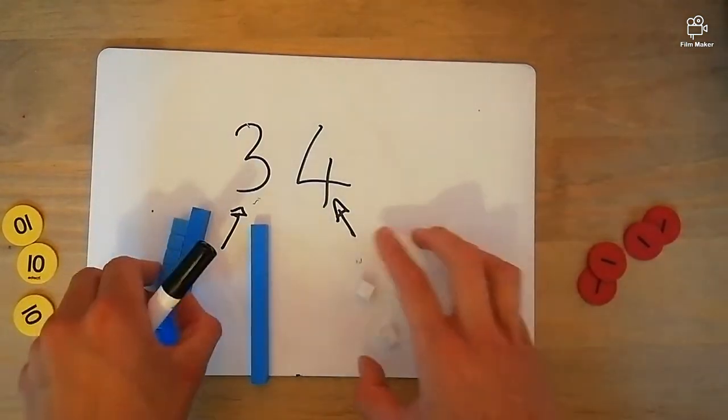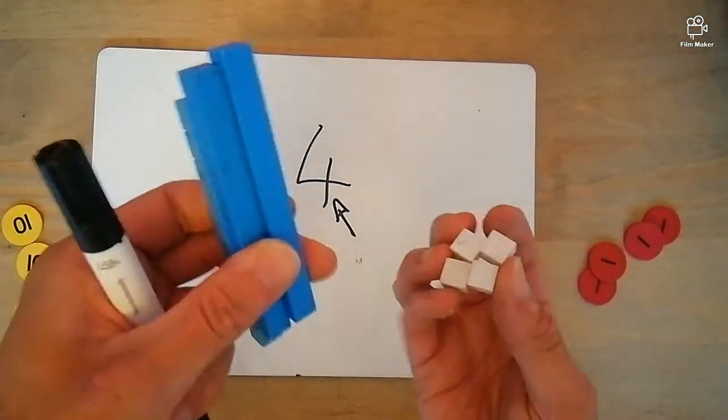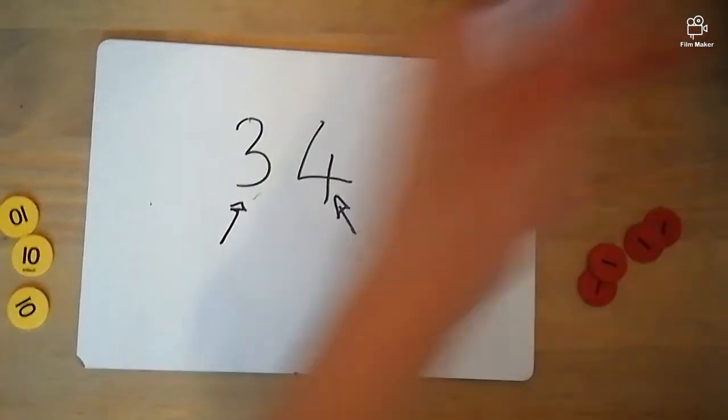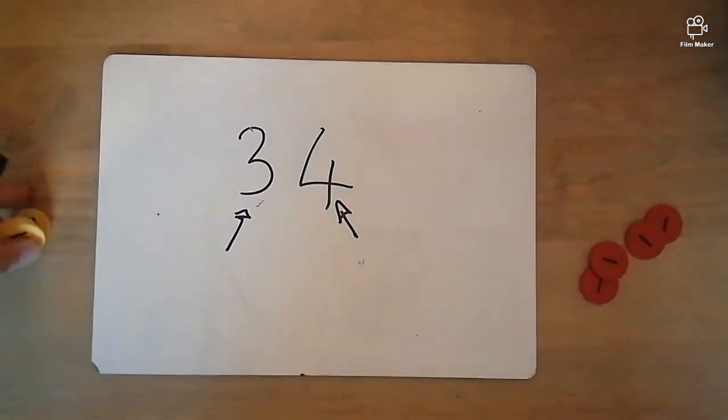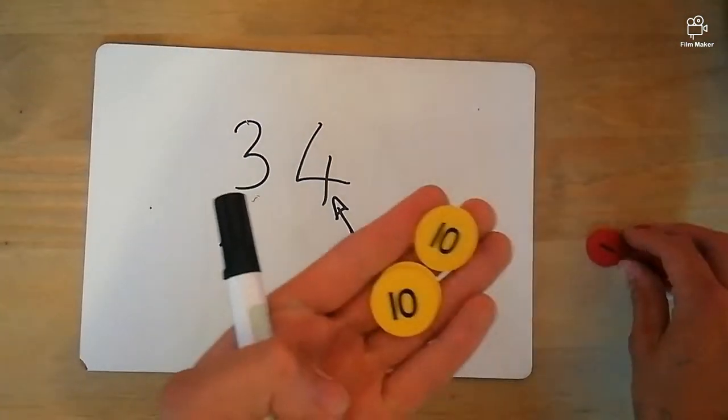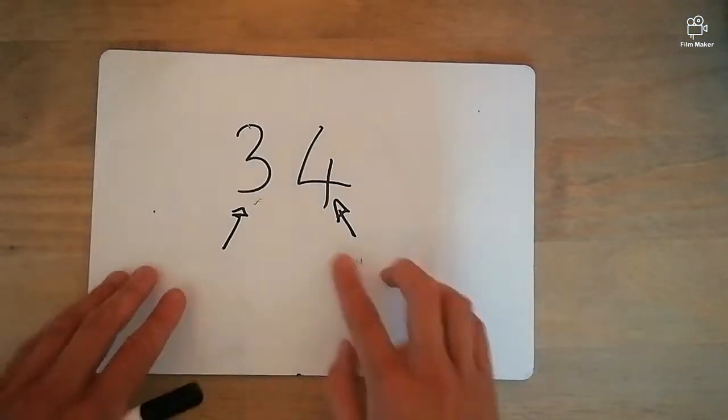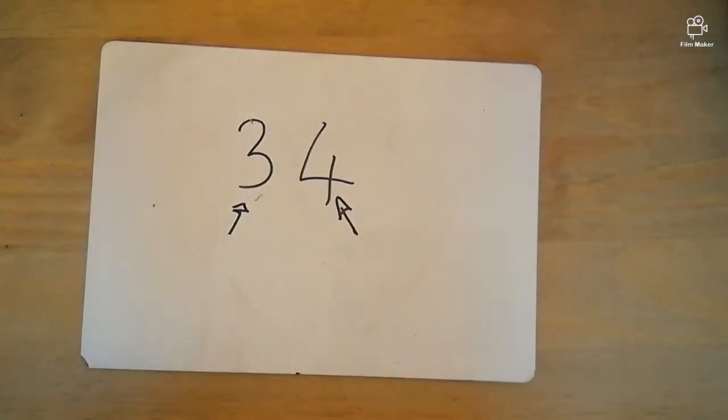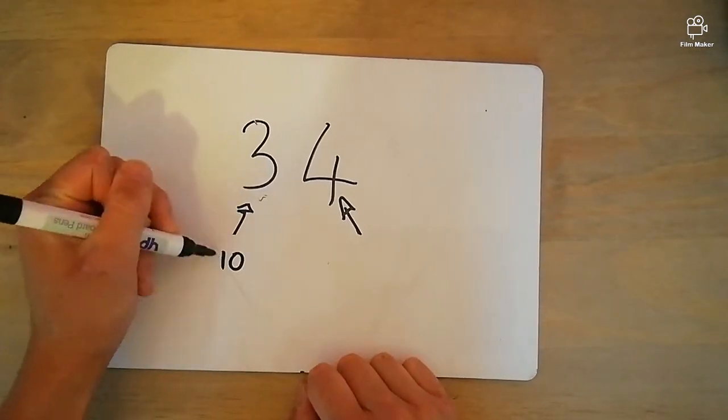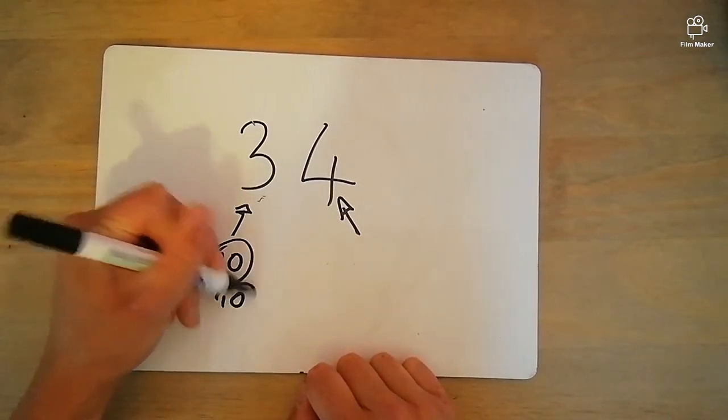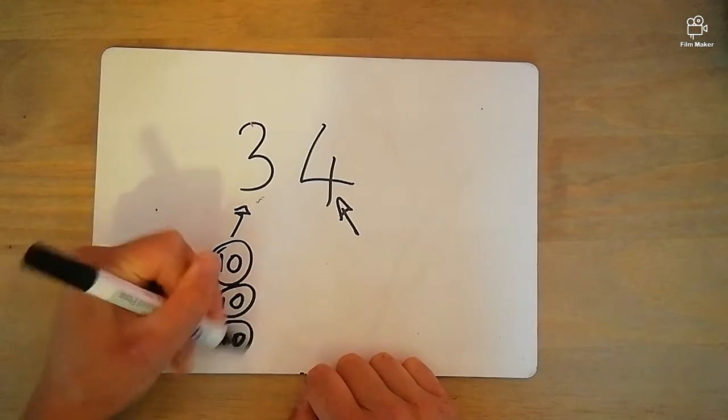I'm very lucky at school with the children because I get all of these fancy things to play with and I'd be pushing it if I was to assume that you had these at home. So what we're trying to work with the children alongside using the resources is to actually draw them too. So very simply I can represent 34 like this.